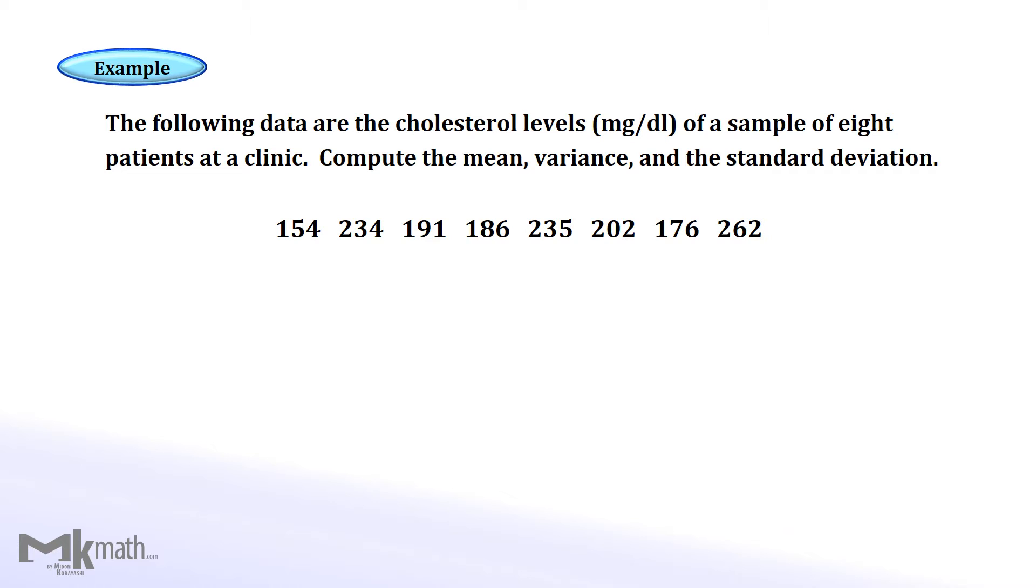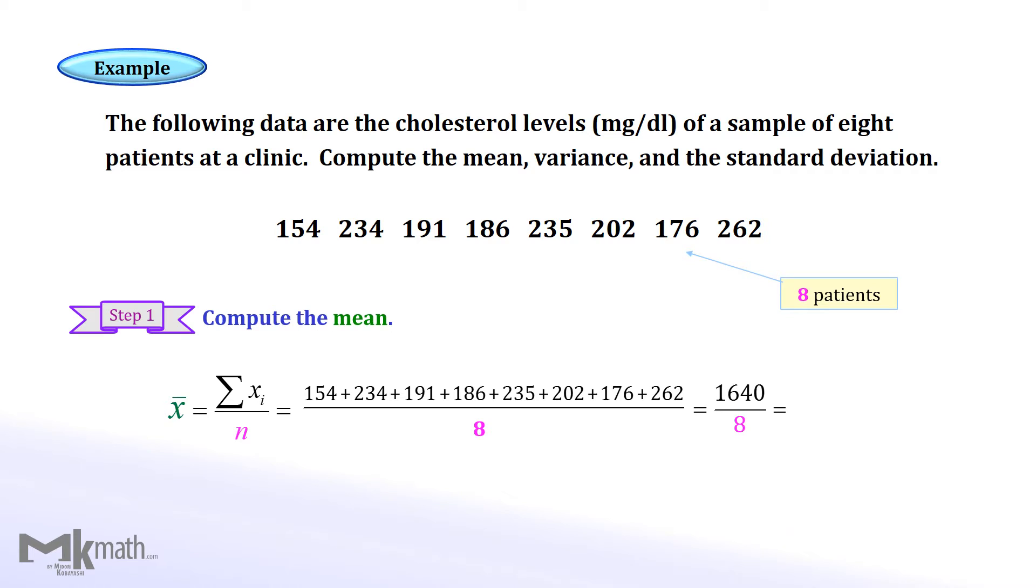Let's take a look at the example. First step, calculate the mean. First, add all observation values and divide the sum by the number of observations, which is 8 patients, to get the mean as 205 mg per deciliter.